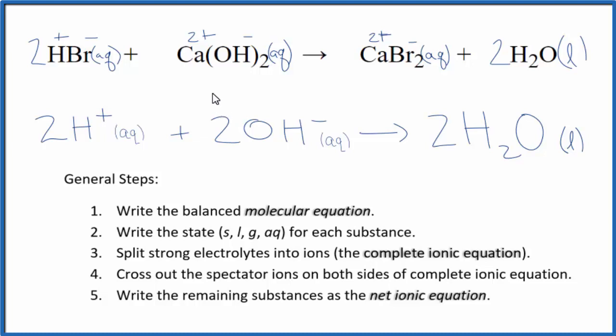One thing we can do, though, you see that there's a coefficient of 2 in front of each substance. Let's reduce that down to a lower number and have 1, 1, 1, although we don't write the 1. This is a more compact net ionic equation.